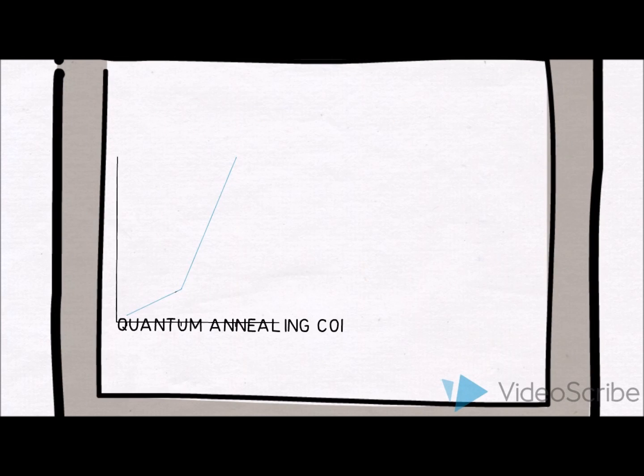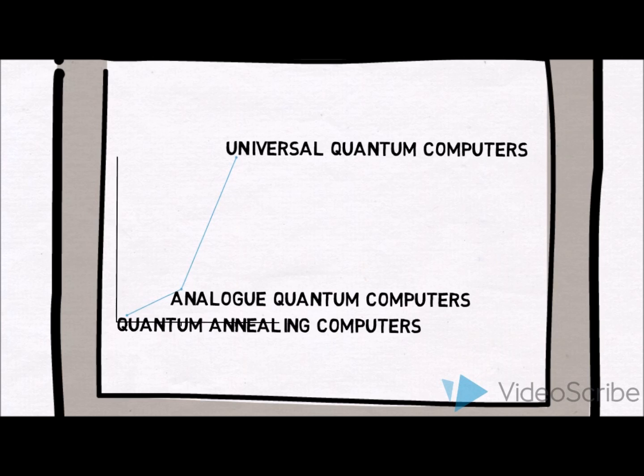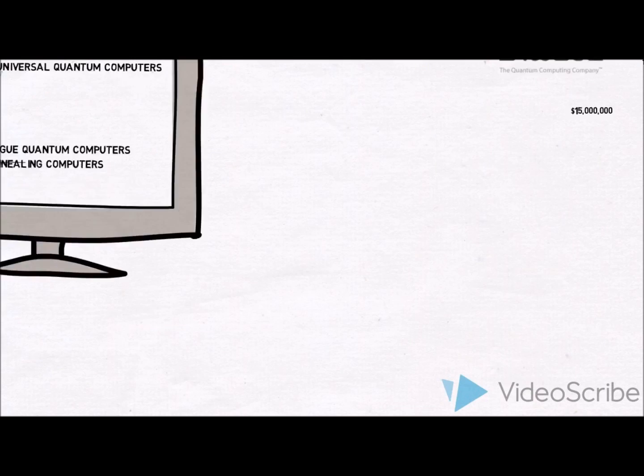There are three types of quantum computers: quantum annealing, the most simple; analog, much more complex; and universal, the most complex and powerful.